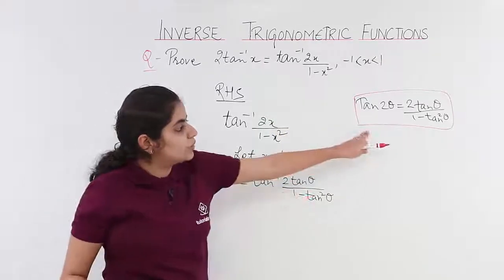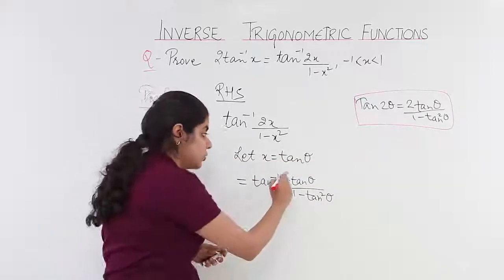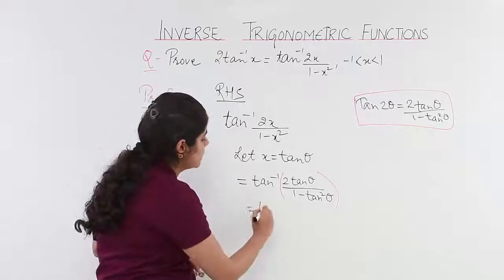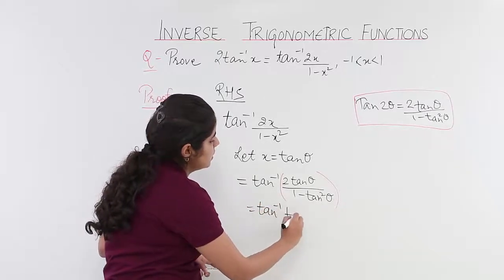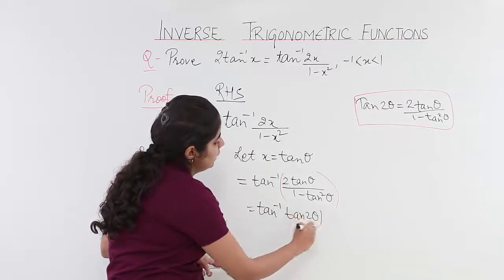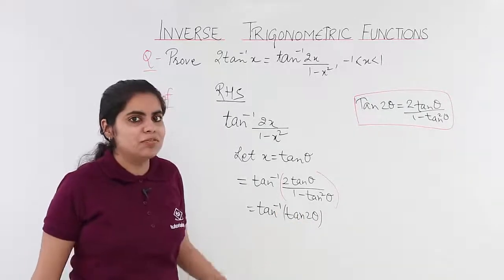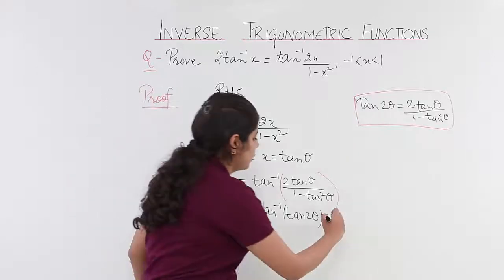We are going to substitute tan 2 theta in place of the whole bracket. Why? Because it itself is a formula. So it becomes tan inverse tan 2 theta. Now, what about tan and tan inverse? These both basically nullify each other. So we have 2 theta.